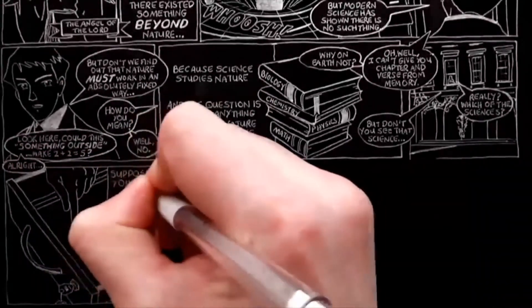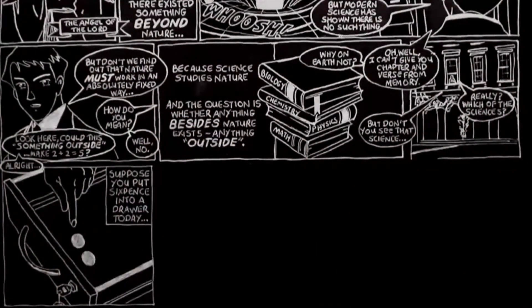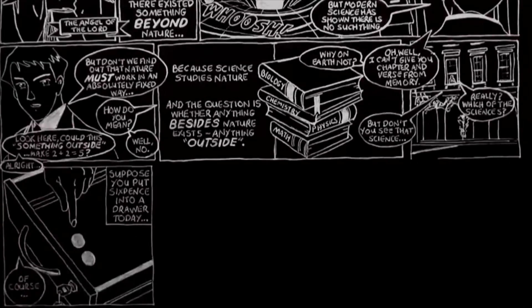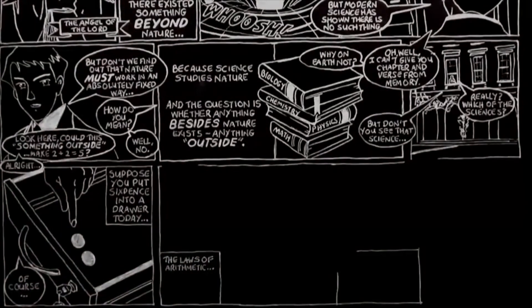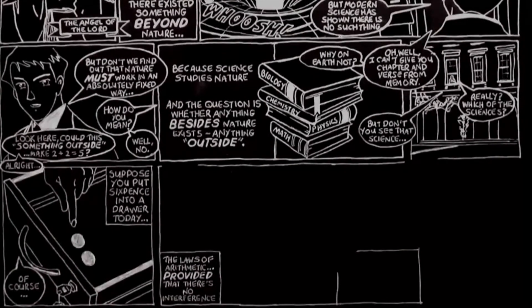Half a moment, said I. Suppose you put sixpence into a drawer today and sixpence into the same drawer tomorrow. Do the laws of arithmetic make it certain you'll find a shilling's worth there the day after? Of course, said he, provided no one's been tampering with your drawer. Ah, but that's the whole point, said I. The laws of arithmetic can tell you what you'll find with absolute certainty, provided that there's no interference.